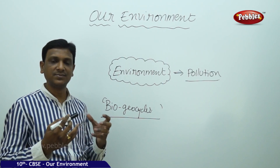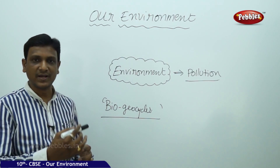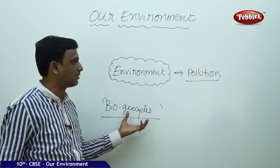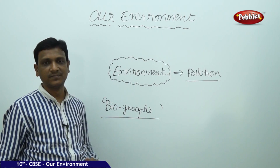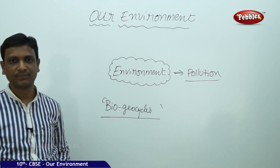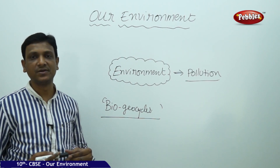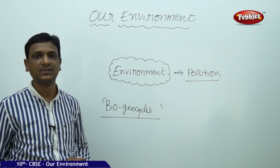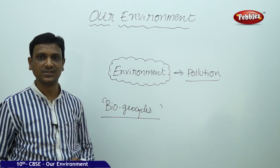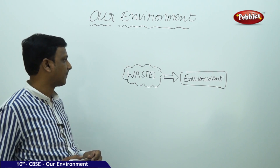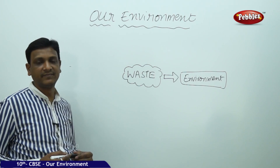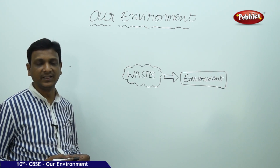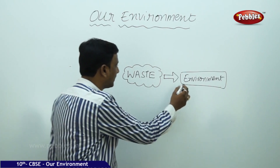As discussed, there are some changes in the environment which are naturally run by these biogeocycles, but these cycles are disrupted by human intervention. Now we are going to see how human activities are influencing the environment and what are their consequences. The major human activity that disturbs the environment is adding waste to the environment.